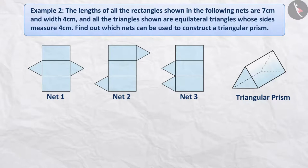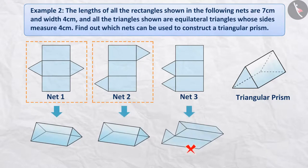Therefore, we can say that only the net shown in the first and second figure can be used to make a triangular prism. Can you explain why? Think, think.